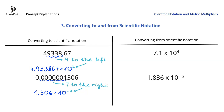Next let's see how to convert from scientific notation to a regular number. We will start by writing down 7.1. Since we have a positive 4 in the power of 10 and we are converting from scientific notation to a regular number, we will move the decimal point 4 places to the right. To finish up, we will fill in the empty spaces with zeros, so we get 71,000.